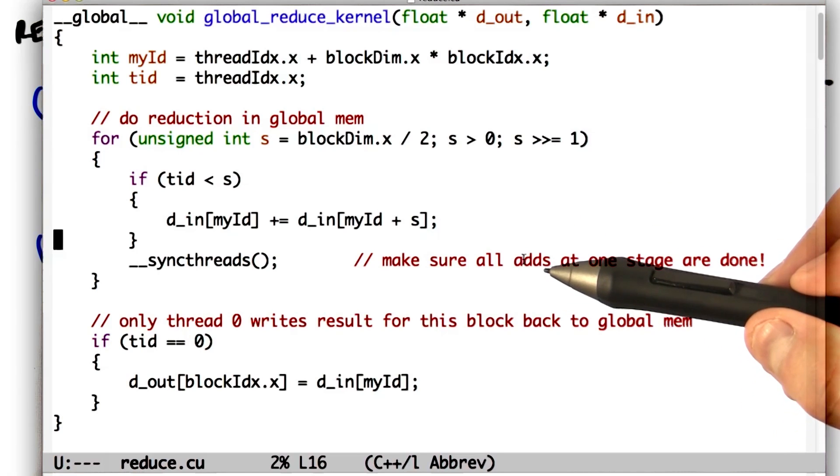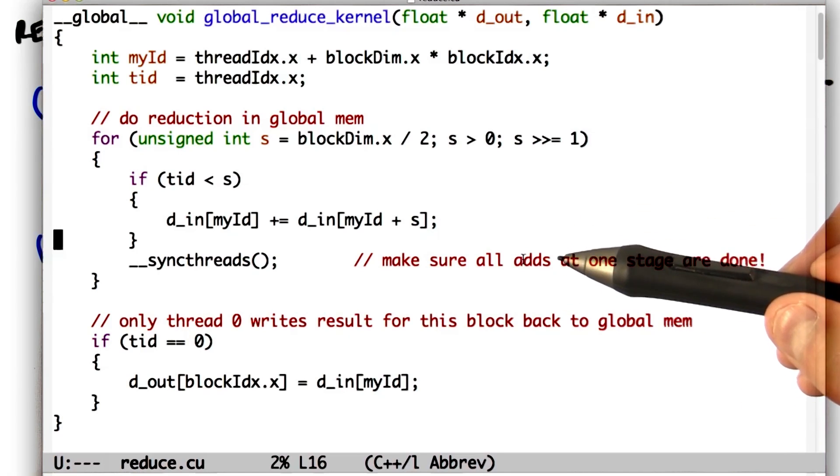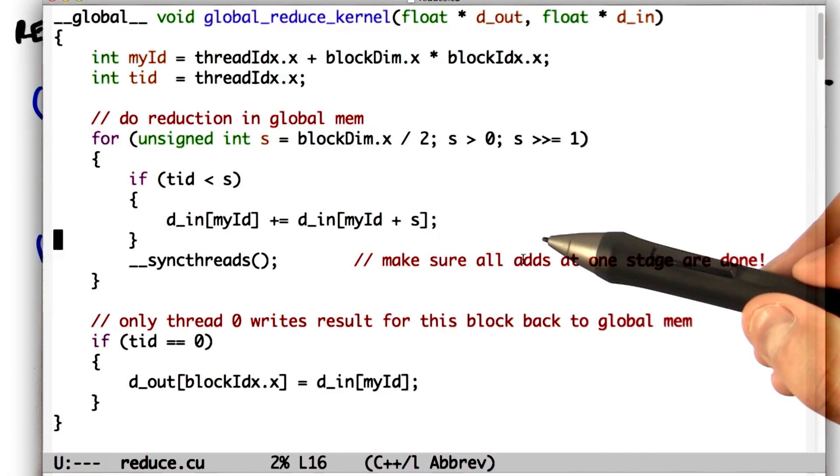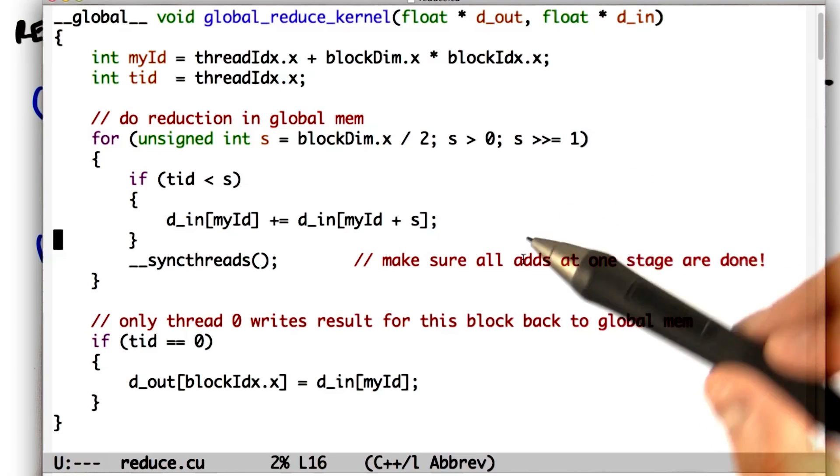The CUDA feature we use to do this is called shared memory, and we'll store all intermediate values in shared memory where all threads can access them. Shared memory is considerably faster than global memory. Let's take a look at the kernel.